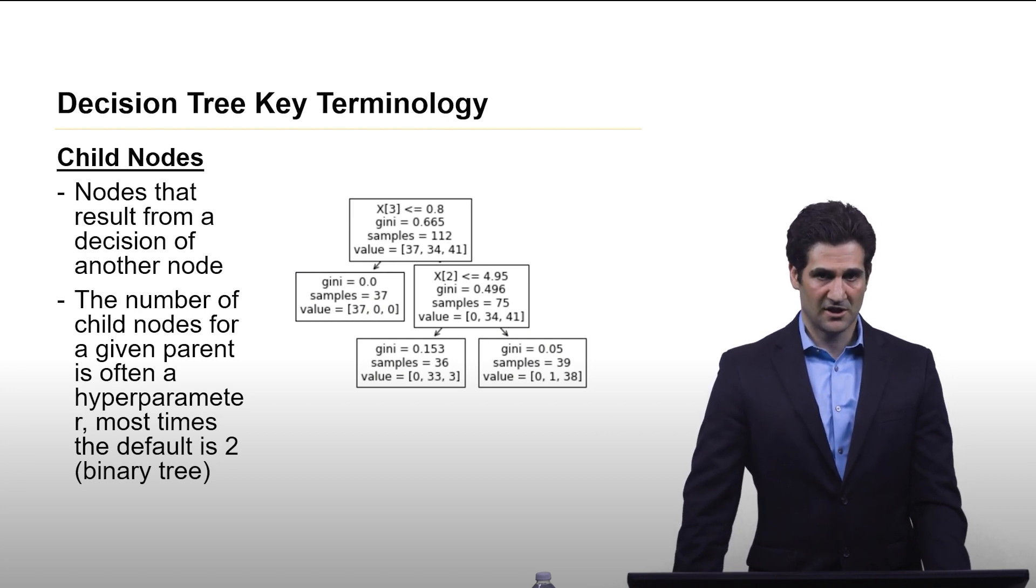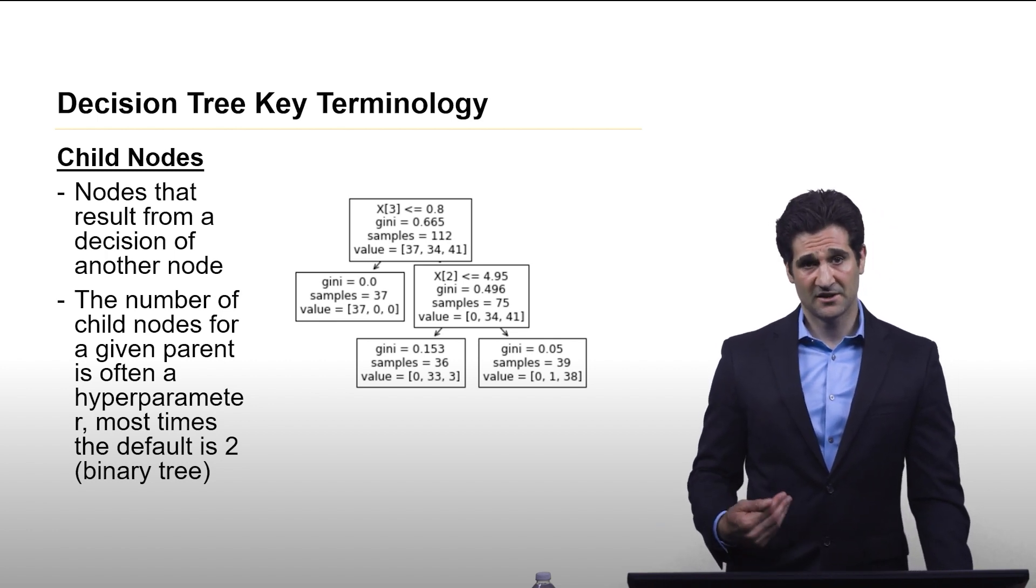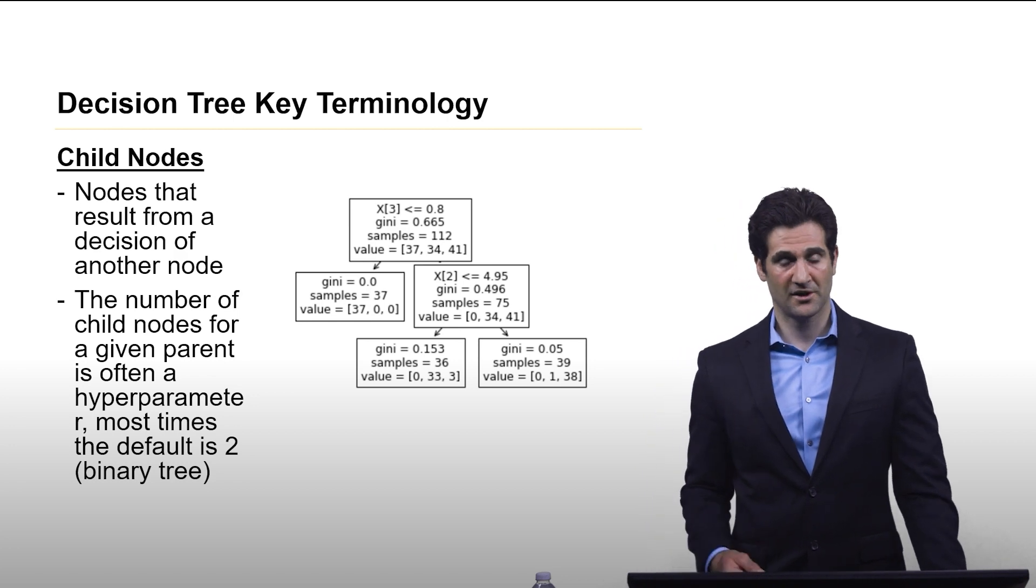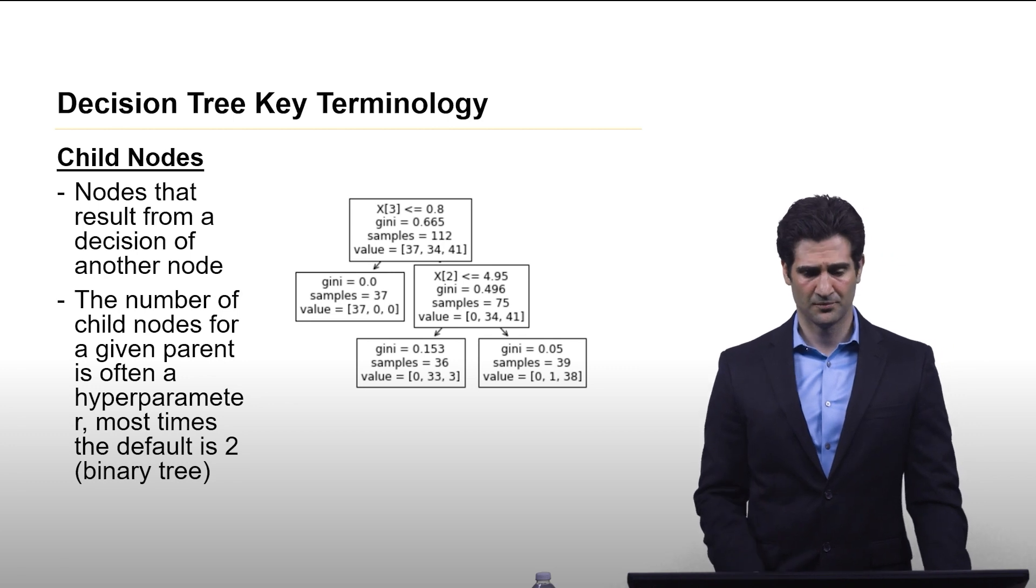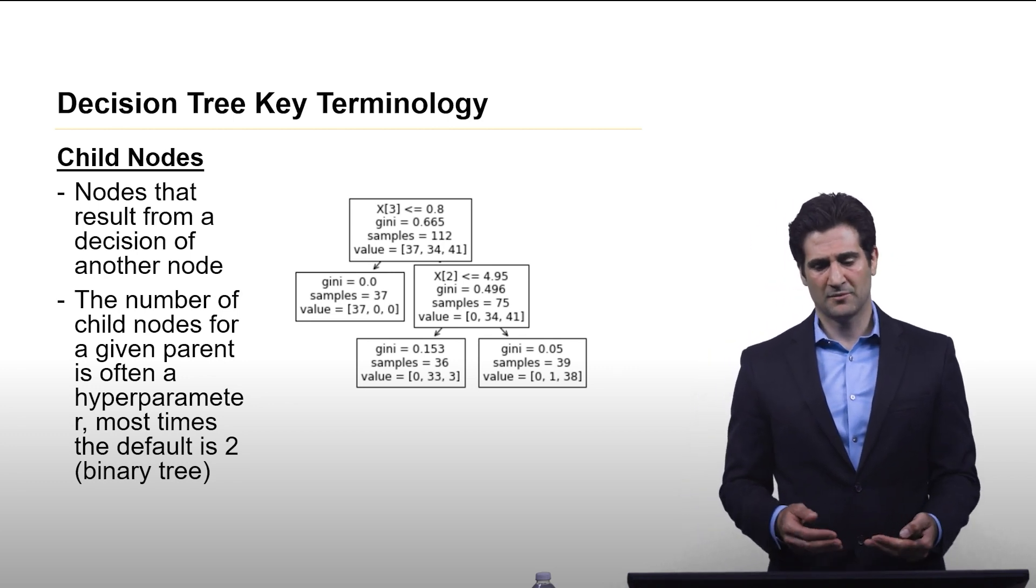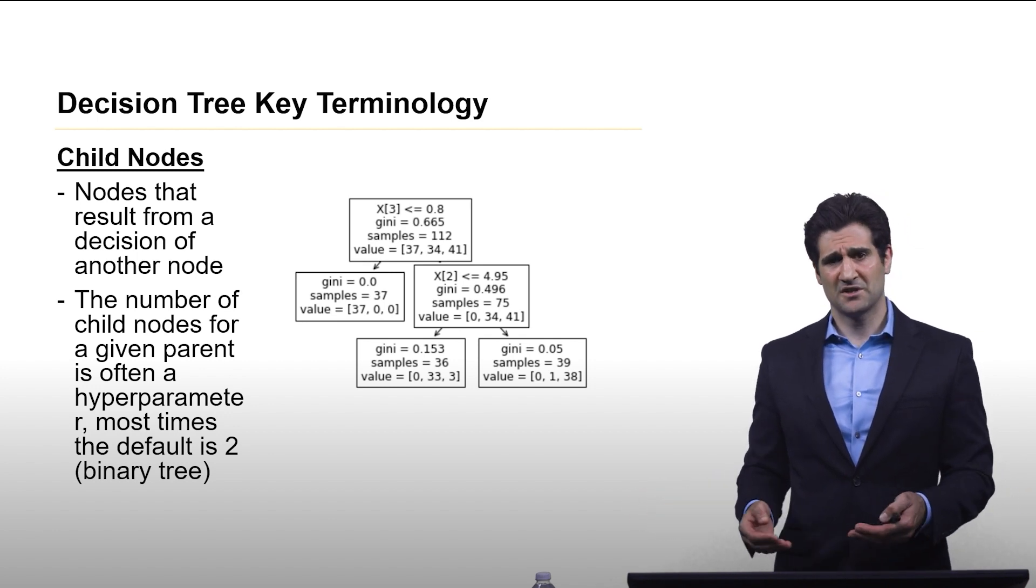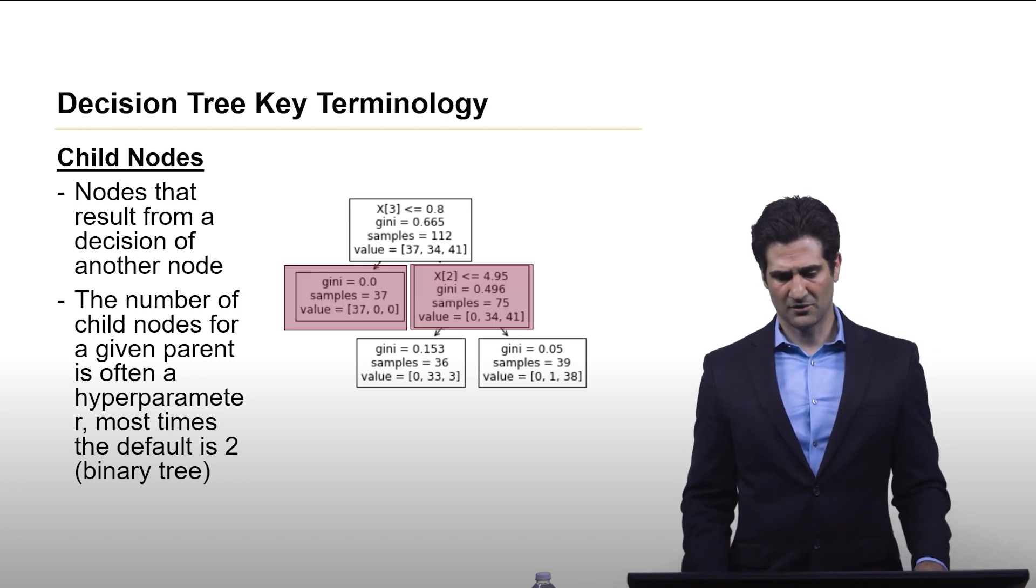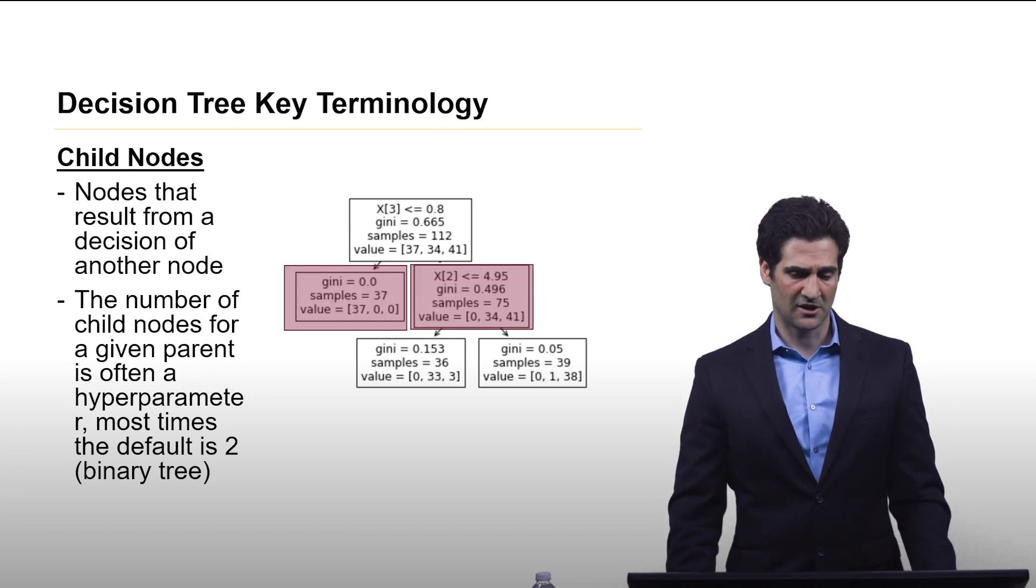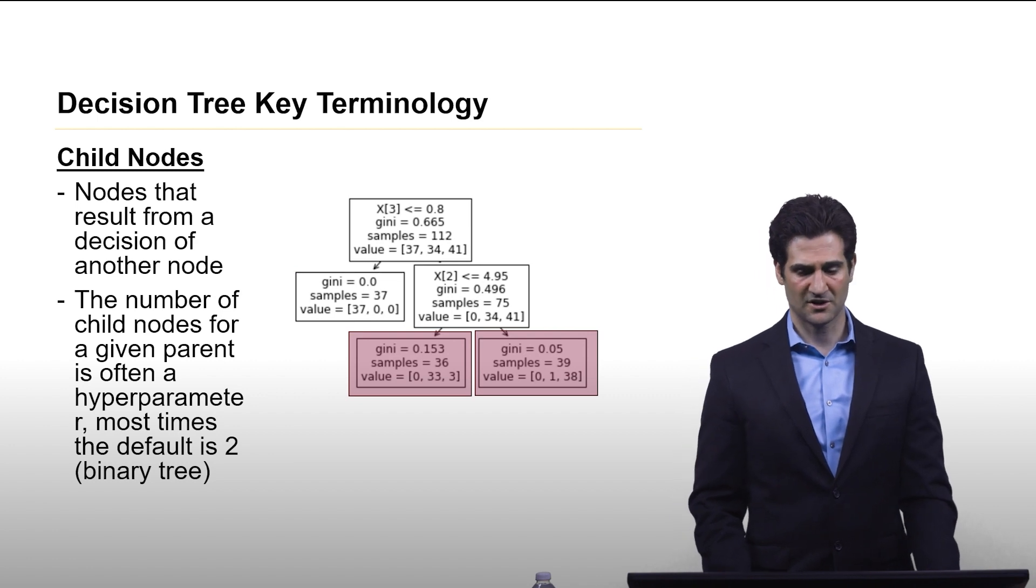Now, a child node is any node that is subordinate to one that is above it. Now specifying the number of child nodes per parent node is also another common hyperparameter, although in practice, it usually ends up being two. And that's simply because if you're looking at features that are real valued, it's much easier to look at, hey, is it greater than or less than? And so, the two highlighted nodes in the decision tree, they are the child node of the one above it, and there's two more child nodes that are seen right here.